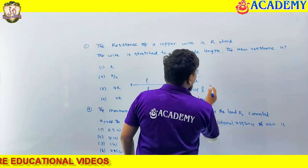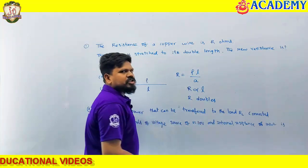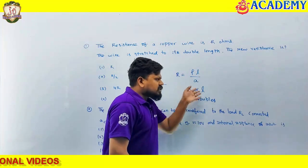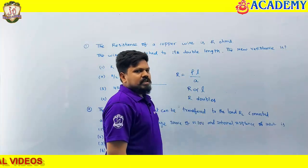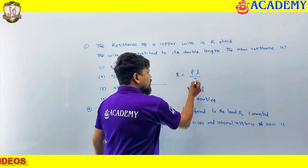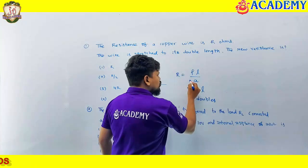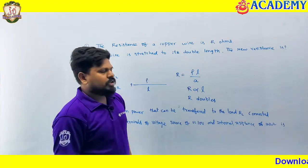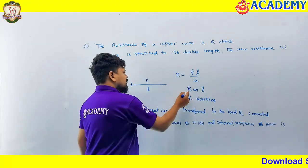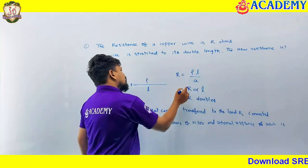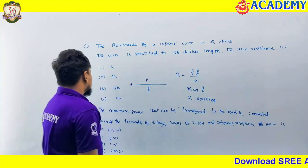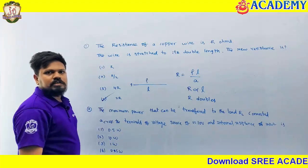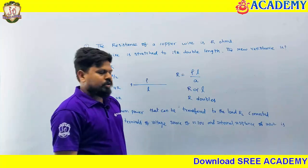Understanding right? Remaining all are not changing. If area is doubling — for example, area is 2A — then resistance will become half. So, length is doubling means automatically resistance will become double. 2R will be the answer for this question.